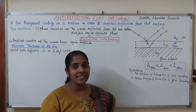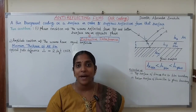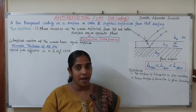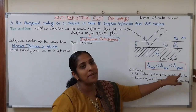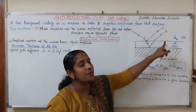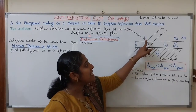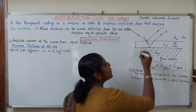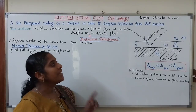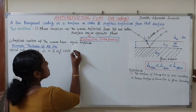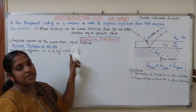Stokes' law states: when light is reflected at a rarer-to-denser boundary, the light ray undergoes a phase change of π, corresponding to a path change of λ/2. At the top surface of the film, the boundary is air-to-film (μ_air to μ_film). Since μ_air < μ_film, the light is reflected at a rarer-to-denser boundary, so a phase change of π occurs at the top surface, corresponding to a path correction of ±λ/2.